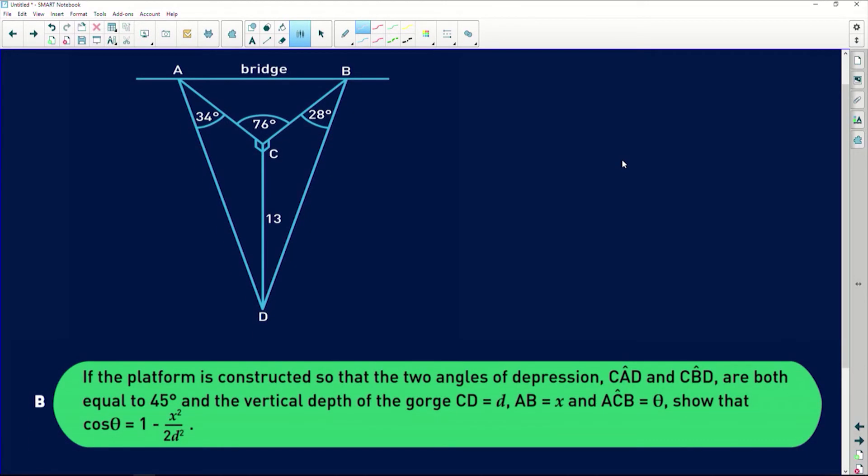Simple enough guys. Let's move on to the next question because this is only going to get more complicated. Now it says if the platform is constructed so that the two angles of depression CAD and CBD are both equal to 45 degrees, and the vertical depth of the gorge CD is equal to d, AB is equal to x, ACB is equal to theta. This requires a whole redraw of this diagram because they're changing every variable.